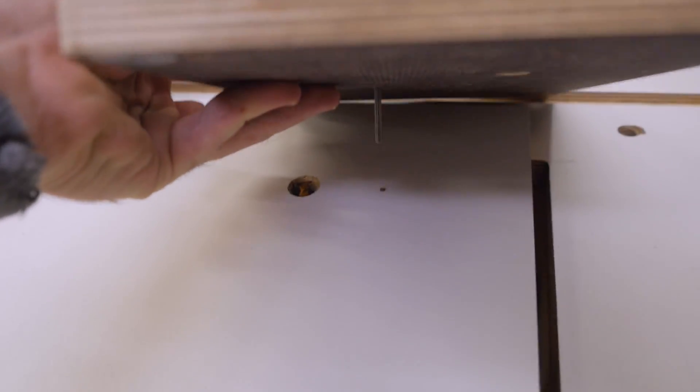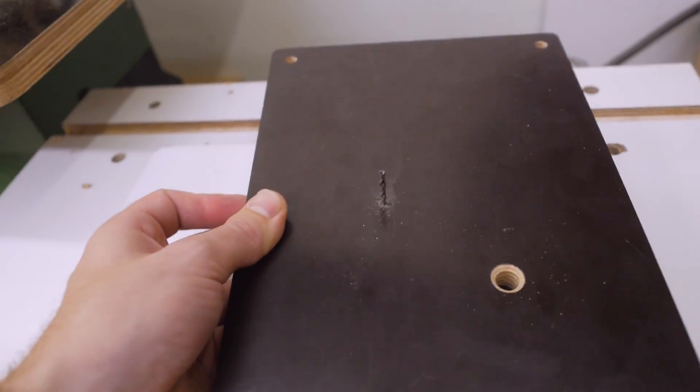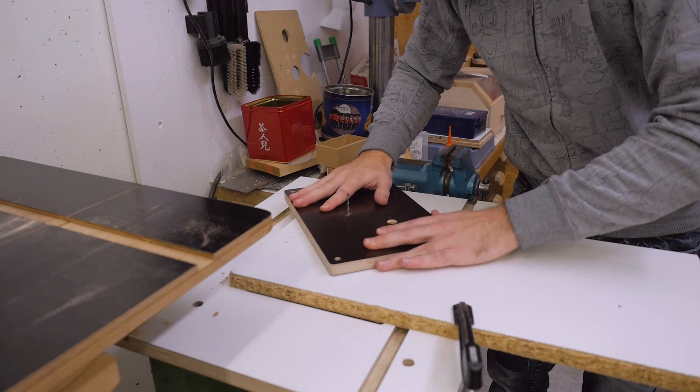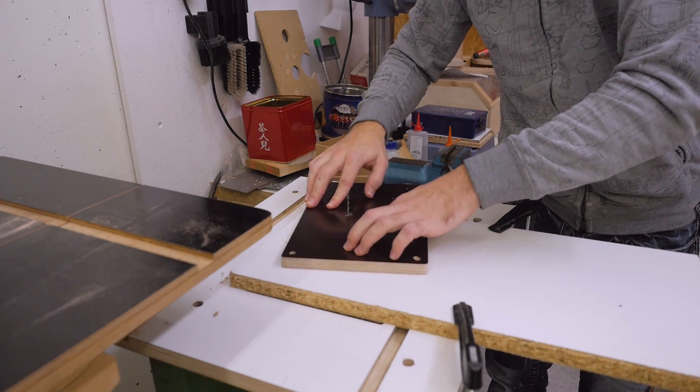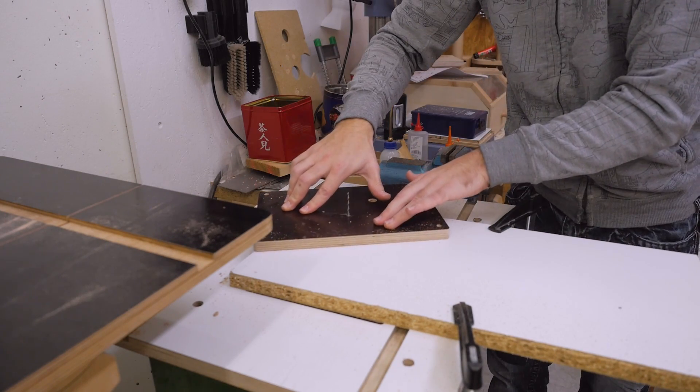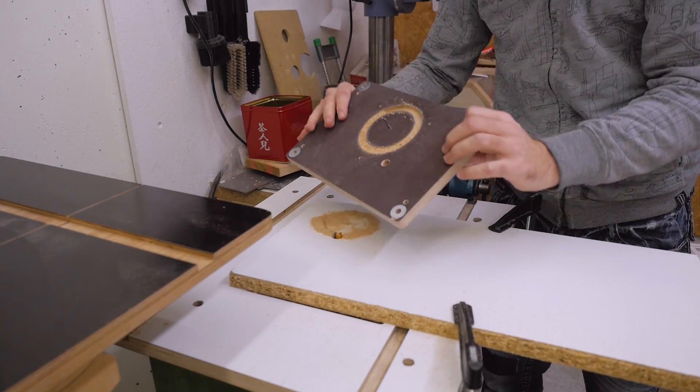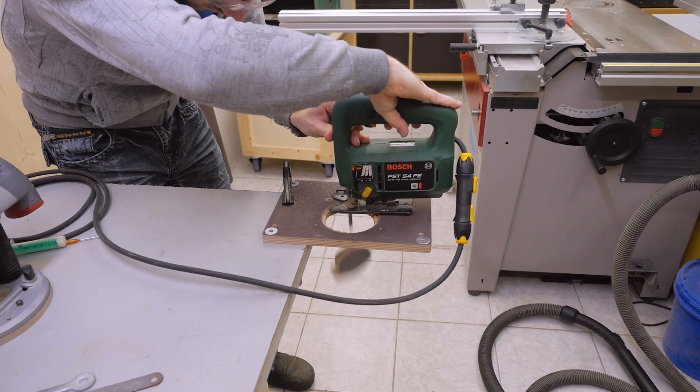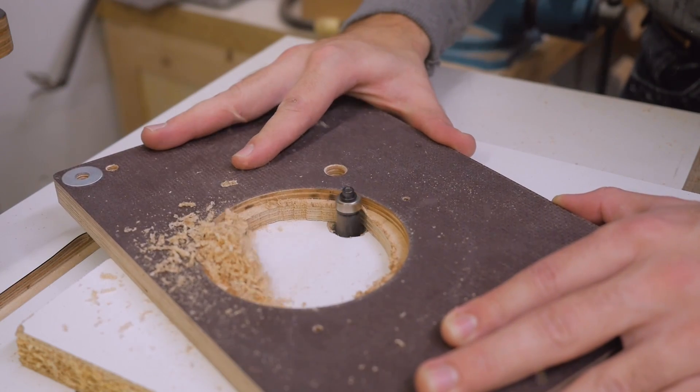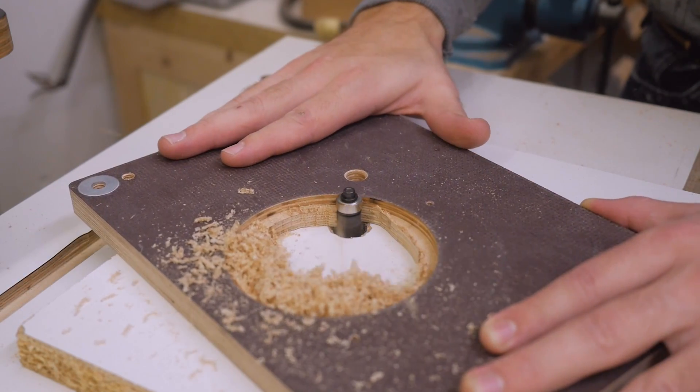I can now stick this into the hole and then route the circle. Here I only route it just enough so that the bearing of a flush trim bit has enough contact area. Without dust collection, routing makes a lot of chips.